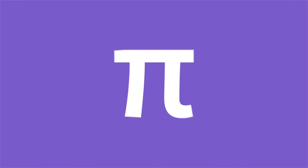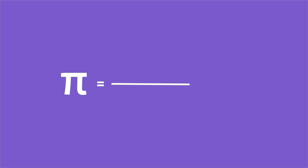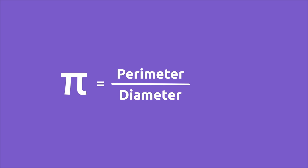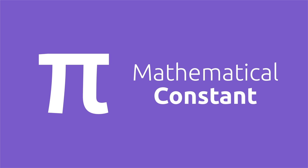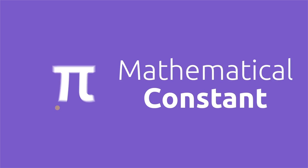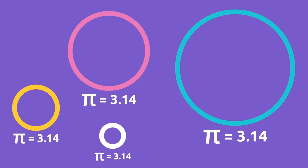It's like magic, isn't it? The result we get every time we divide the perimeter by the diameter of any circle in the world will always be 3.14. This happens because pi is a mathematical constant — it's always the same number regardless of what the circles or circumferences may measure.